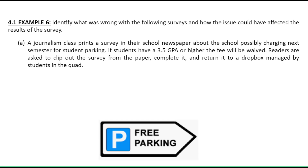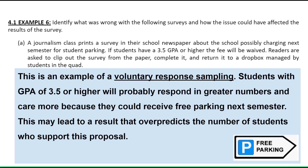If students have a 3.5 GPA or higher, the fee will be waived. Readers are asked to clip out the survey from the paper, complete it, and turn it into a drop box managed by students in the quad. This example is actually not a type of bias, but a poor sampling strategy — it's an example of voluntary response sampling. Students with a GPA of 3.5 or higher will probably respond in greater numbers and care more because they can receive free parking next semester. This may lead to a result that over-predicts the number of students who support the proposal.